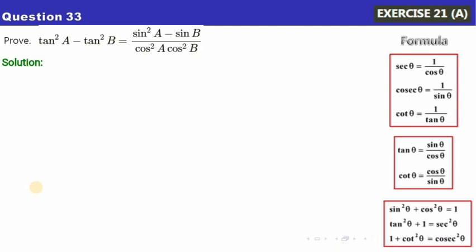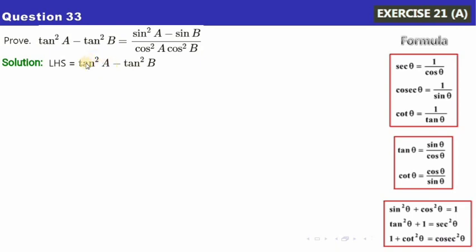Let me begin with the first equation for the day: we need to prove that tan²A minus tan²B equals (sin²A minus sin²B) divided by (cos²A times cos²B). On the left-hand side we have tan²A minus tan²B, and on the right-hand side we have only sine and cosine, so let's convert accordingly.